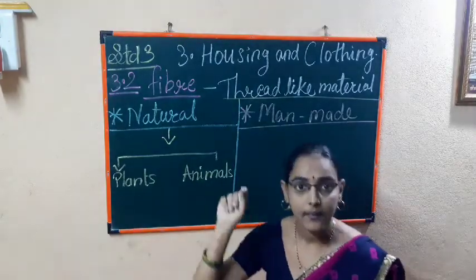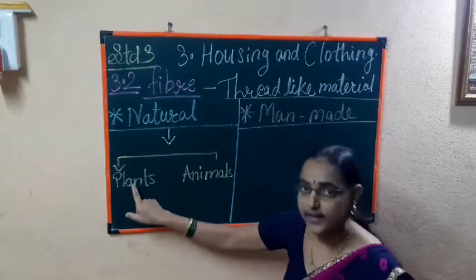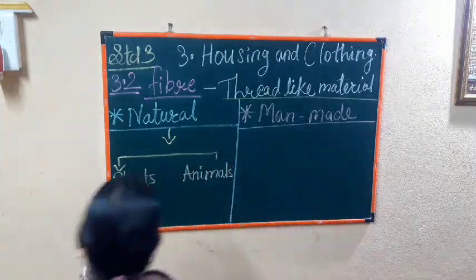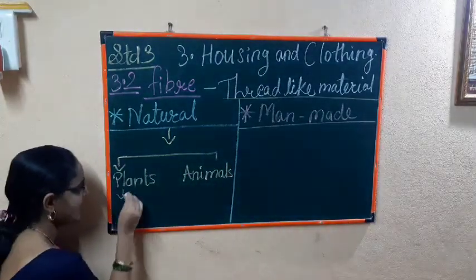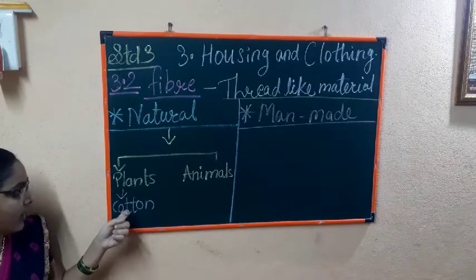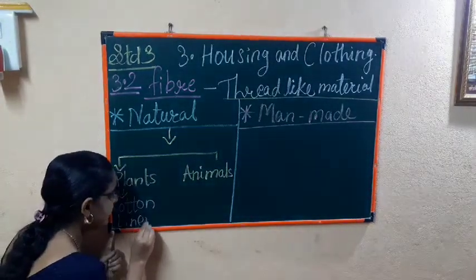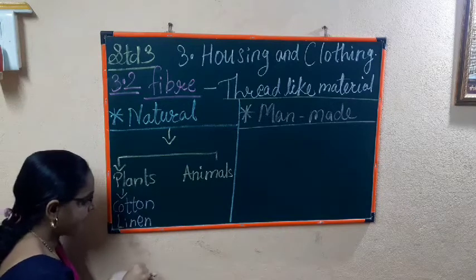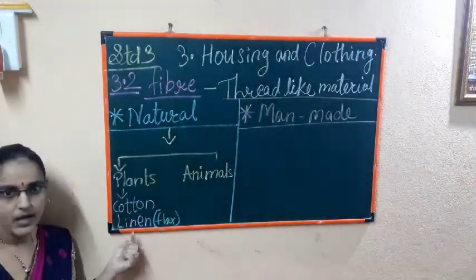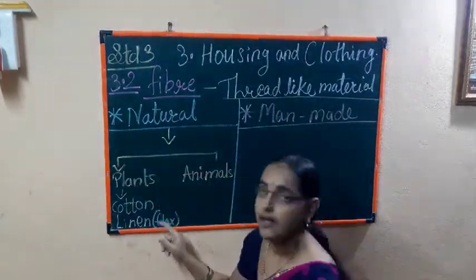Fibers that we get from plants are called plant fibers — it's very easy. For example, cotton — we get cotton from the cotton plant. And we get linen from the flax plant. These are two examples of fibers we get from plants.